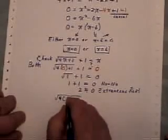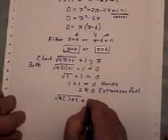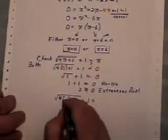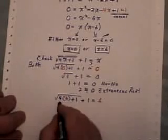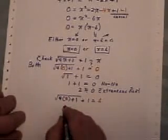Now I'm going to check my other answer, which is x equals 6. So wherever I see the letter x, I'm going to put down a 6. 4 times 6 is 24 and 1. This is the square root of 25.